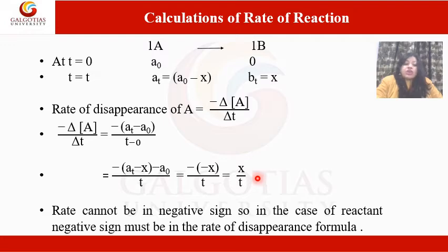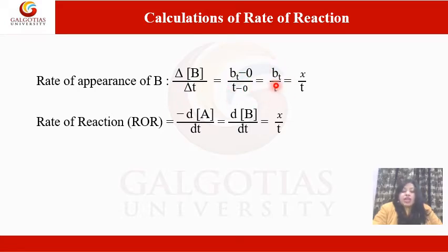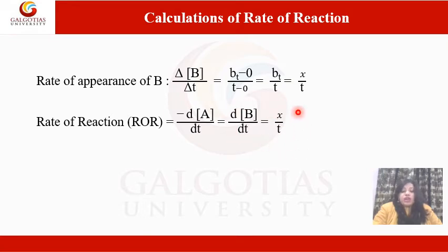This means the rate cannot be negative. In the case of a reactant, the negative sign must be included in the rate of disappearance formula. The rate of appearance of B = ΔB/ΔT = (Bₜ − 0)/(T − 0) = Bₜ/T = X/T. So the rate of reaction (ROR) = −d[A]/dt = d[B]/dt = X/T.